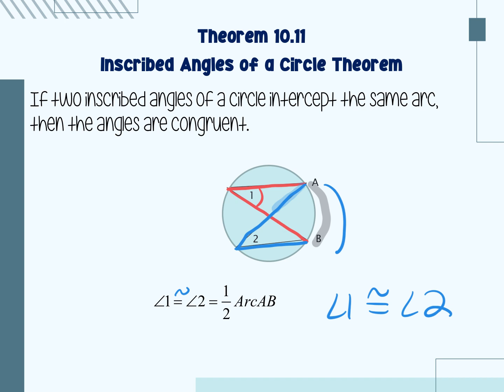If I wanted to find the measure — let's say the arc measure was 40 — then both of the angles are going to be half of that. So angle one will be 20 and angle two will also be 20 because they're both half of the arc measure.